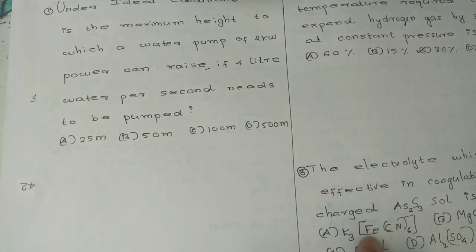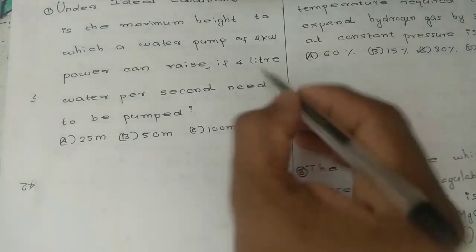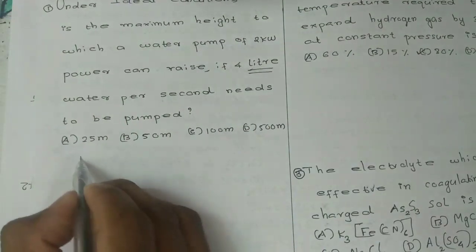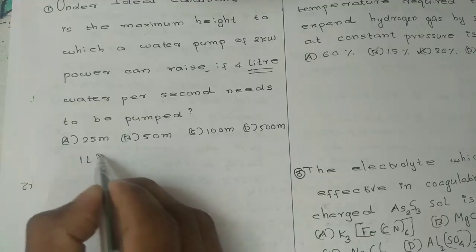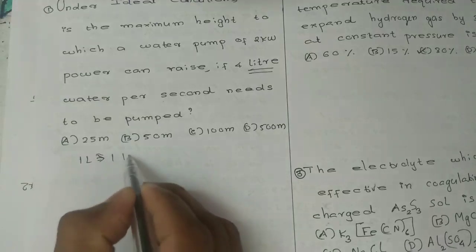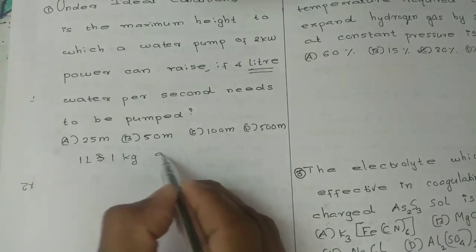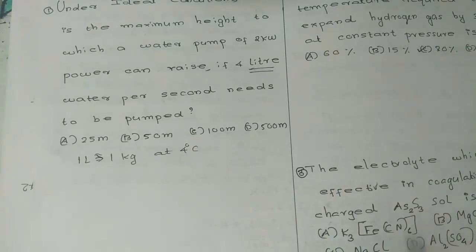The water pump problem: power is 2 kilowatt. 4 liters of water per second needs to be pumped. Note that 1 liter is approximately equal to 1 kilogram at 4 degree Celsius.